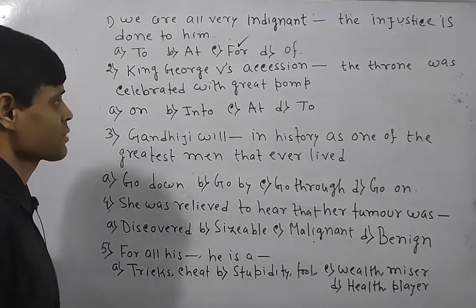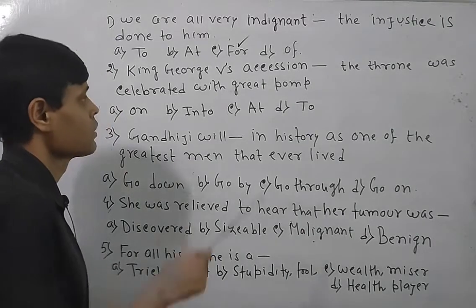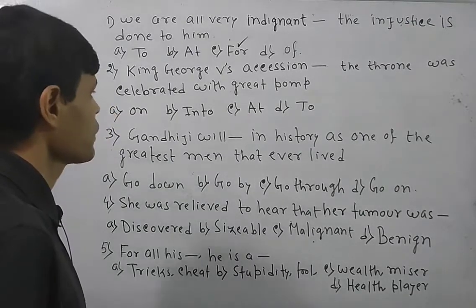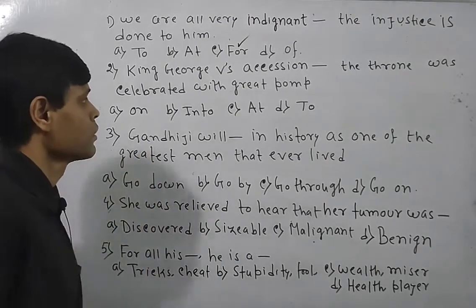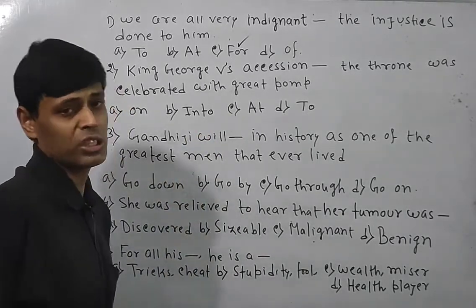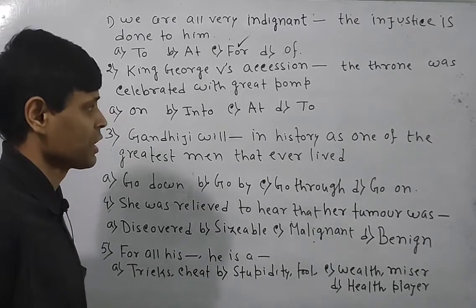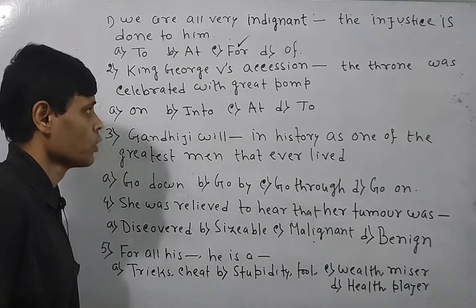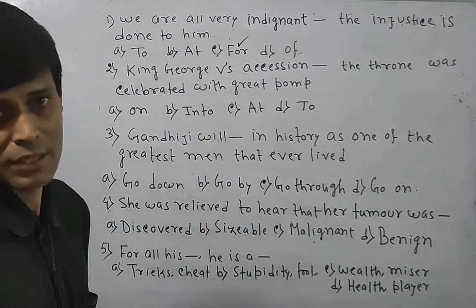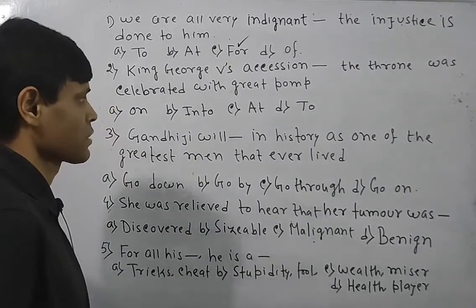Next question: 'King George V's accession ___ throne was celebrated with great pomp and grandeur.' Note it is pronounced 'V's', not 'Vs'. Accession means possession of or sitting on the throne. The 4 options are: on, into, at, to. Whenever we use the word 'accession', we always write 'to' — it is fixed in general cases. So neither on, nor into, nor at will be the answer; 'to' will be the answer.